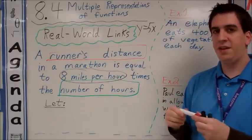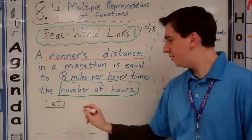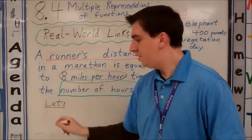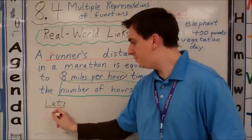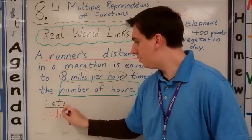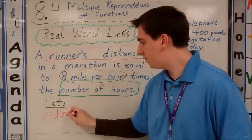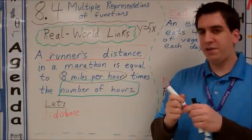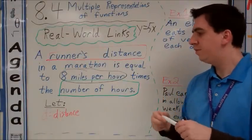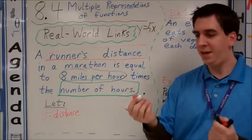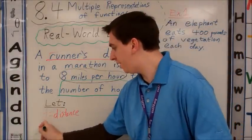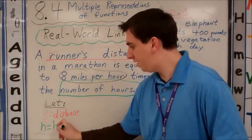So I'm going to start by saying, let's have the distance be defined as d. So d equals distance. And then we're going to say his hours—we can do this a number of different ways. So let's just have h be the number of hours. So h is going to equal hours.